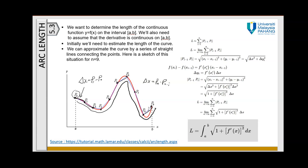Theoretically, before we get the formula — and no need to worry because in this course you only apply the formula — this is the theory on how we get it. The length comes from approximating the summation of all straight lines connected between two points. By using the idea from the Pythagorean theorem, we can find the length between point p₀ and p₁ by forming a right triangle, and so on.